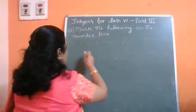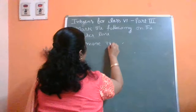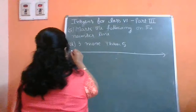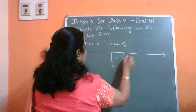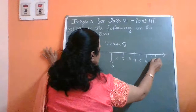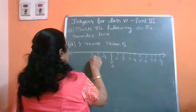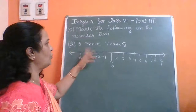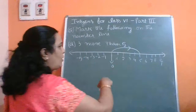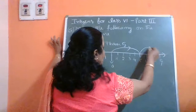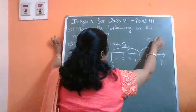The first question is: 3 more than 5. You draw a number line with 0 in the center, marking 4, 5, 6, 7, 8, 9 on the right and minus 1, minus 2, minus 3, minus 4, minus 5 on the left. First you have to go to 5 — from 0 to 5 — and then 'more' means you go 1, 2, 3 steps to the right. 3 more than 5 is 8. Therefore, 5 plus 3 is 8.